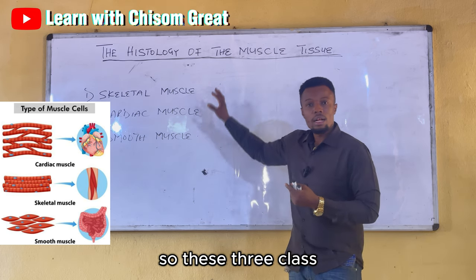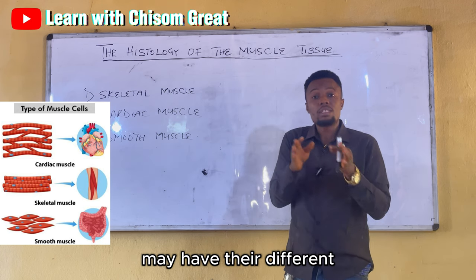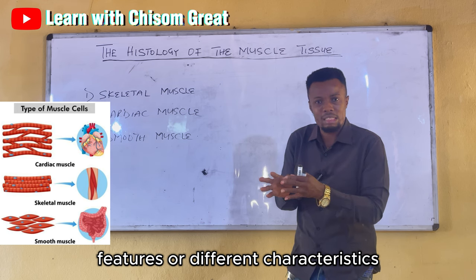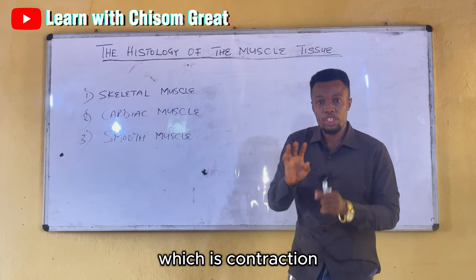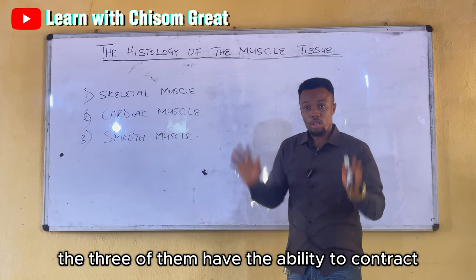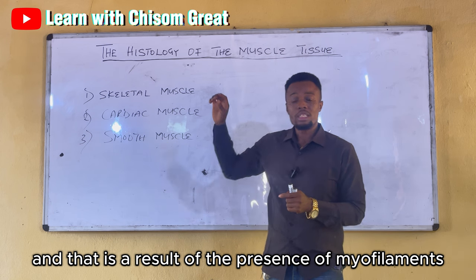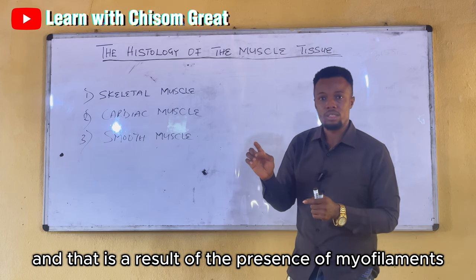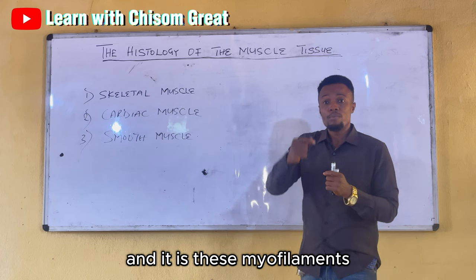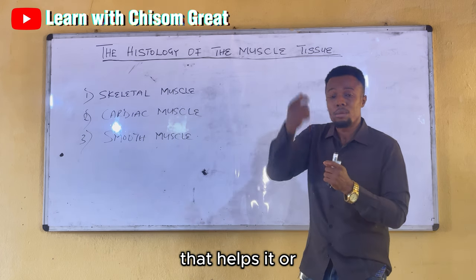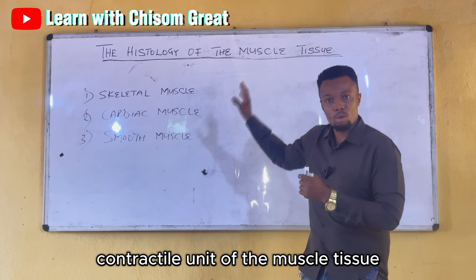These three types of muscle tissue may have their different characteristics. However, there is something they all have in common, which is contraction. The three of them have the ability to contract, and that is a result of the presence of myofilaments. The three of them contain myofilaments, and it is the myofilament that is the contractile unit of the muscle tissue.